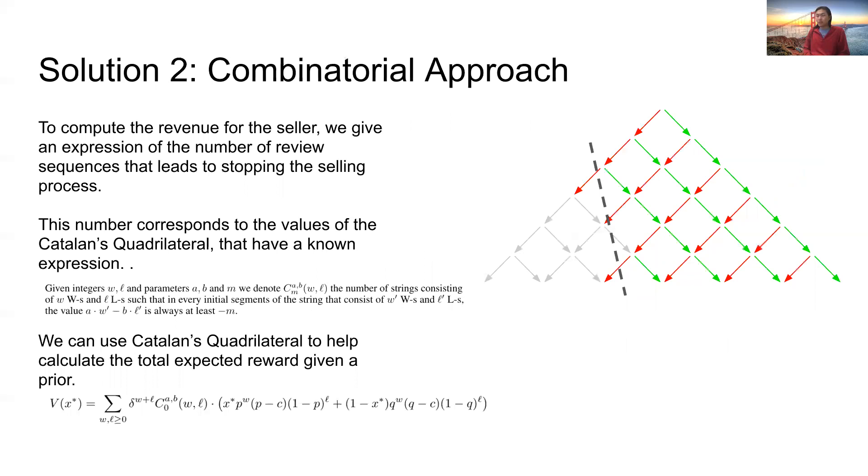In our second approach, we take a combinatorial approach. In order to compute the revenue of the seller, we need to consider the number of review sequences that lead to the product not being sold. Because when the product prior dips below X star, this is when we no longer sell the product. In order to calculate the number of sequences, we use Catalan's quadrilateral numbers, which is an extension of the well-known Catalan numbers.